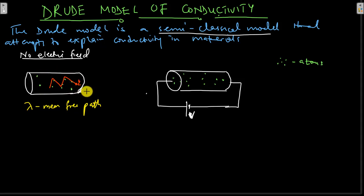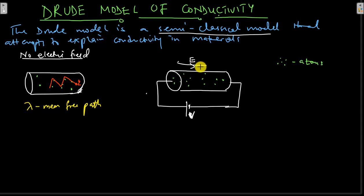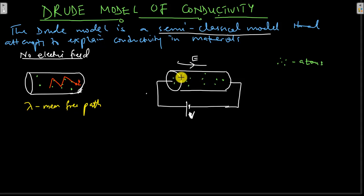In the presence of an electric field — if we connect a source of EMF, a potential difference — an electric field is applied, let's say in this direction, so the charge carriers will begin moving on account of this electric field. If we have negative charge carriers, they will move opposite to the field, while positive charge carriers will move in the direction of the field.